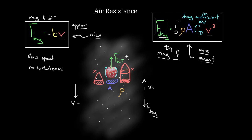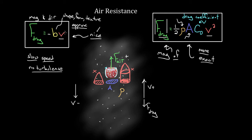So recapping: the drag force on an object is going to be proportional to the density of the fluid through which that object moves. It's also proportional to the cross-sectional area of that object. It's going to depend on the drag coefficient, which is determined by the surface texture of the object interacting with the fluid as well as the contour of the actual shape of that object. And it's proportional to the speed squared of the object moving through that fluid. However, if you're moving at slower speeds and there's basically no turbulence, a nice approximate formula for the drag force is that it's negative b times just the velocity — not the velocity squared. Use the approximate formula for an easy approach at slow speeds; use the exact formula when you need a more precise value.